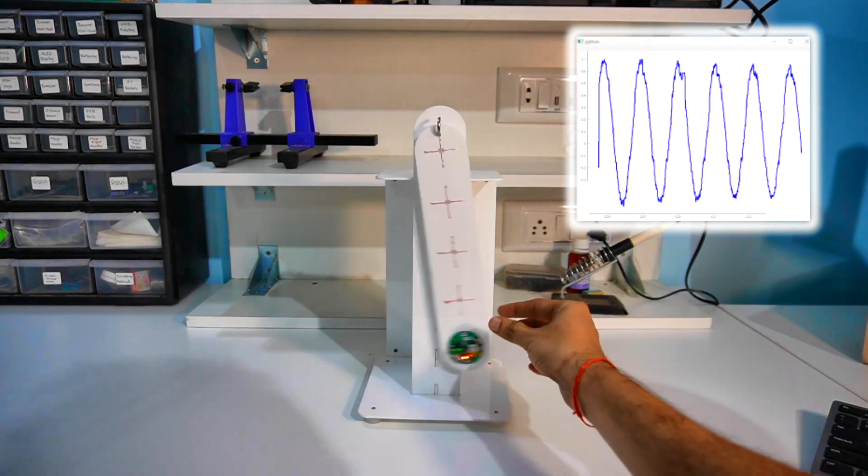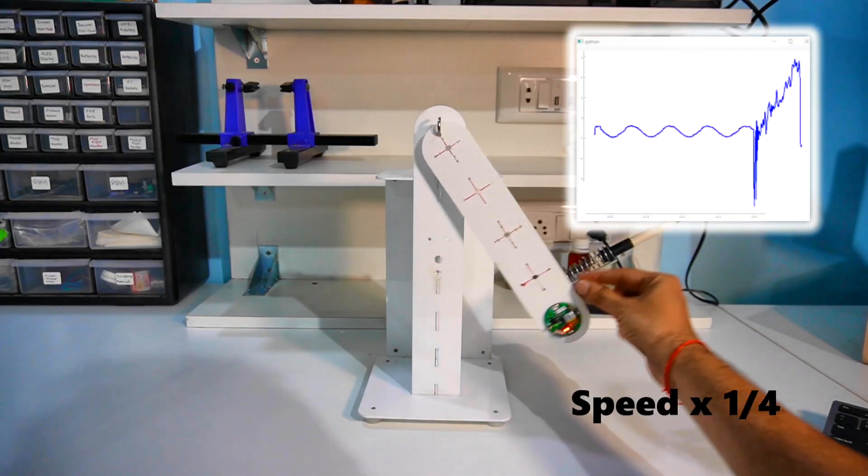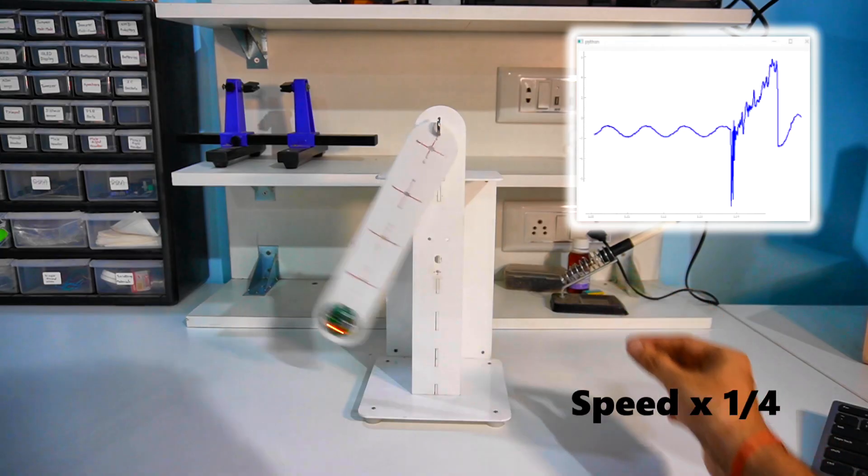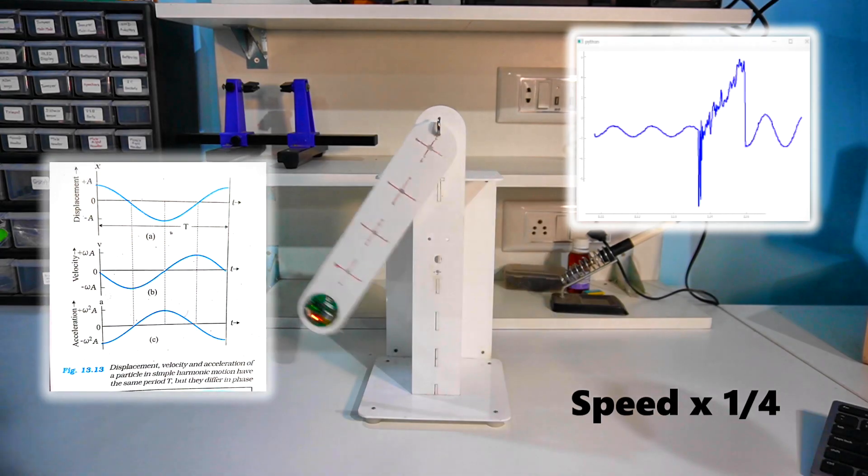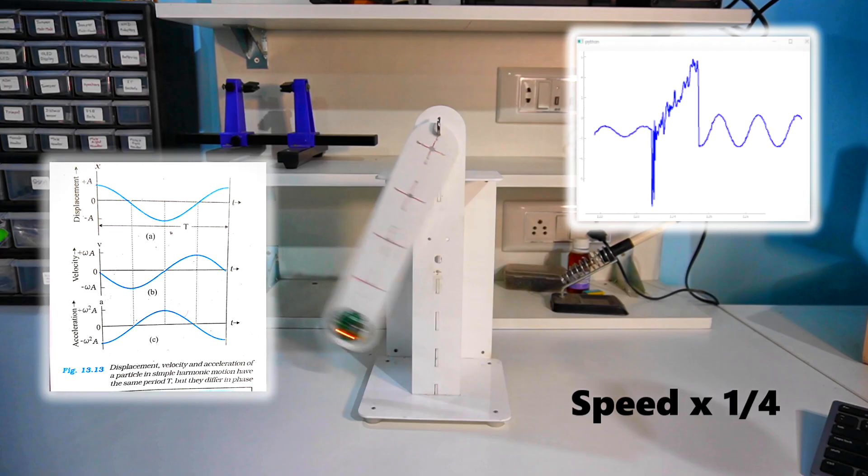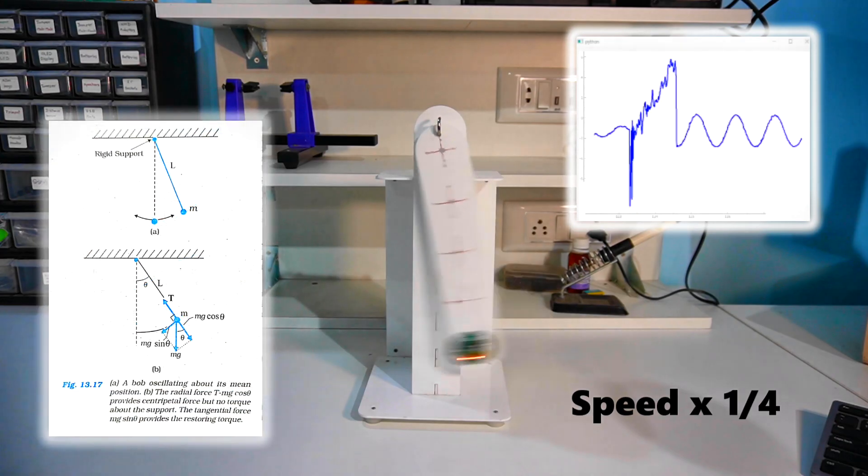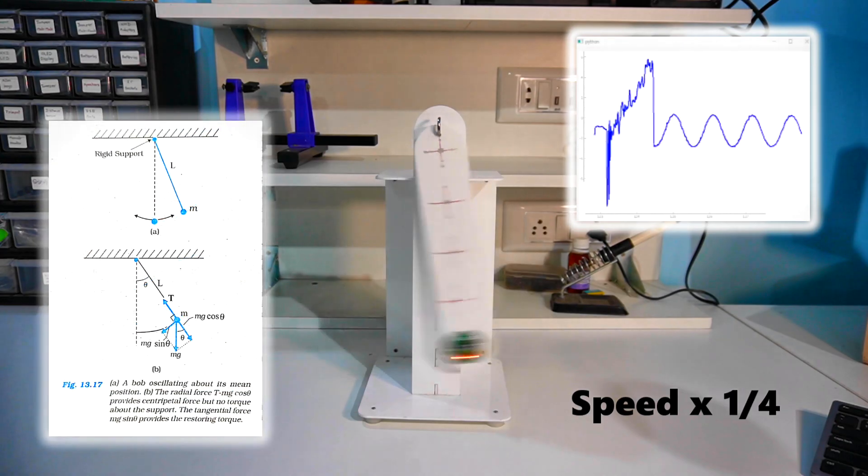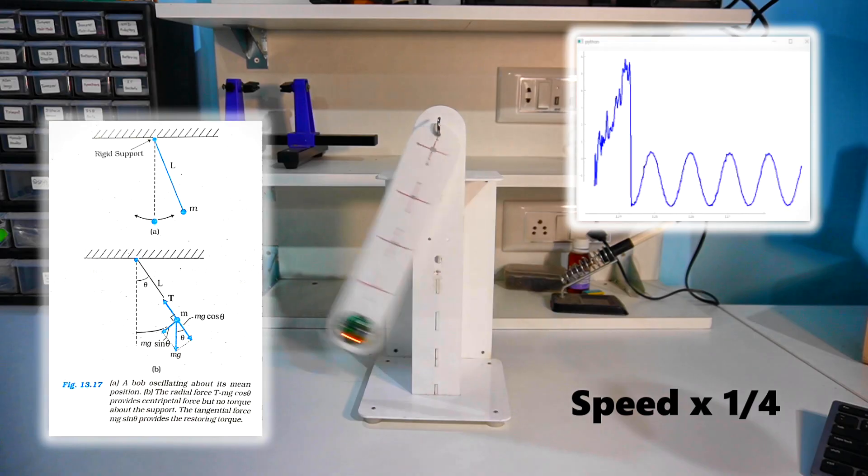Let's slow down the video to a quarter of its original speed. Look at those beautiful curves. We can clearly see that acceleration is highest at the ends and zero at the middle, just like our textbooks say. This clearly demonstrates that the restoring force is directly proportional to the displacement from the equilibrium position.